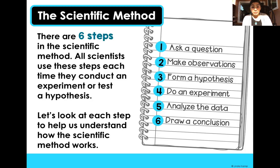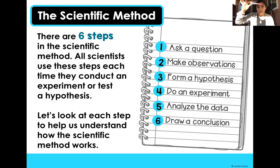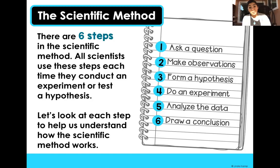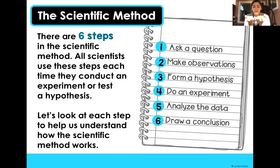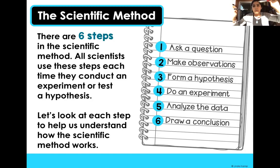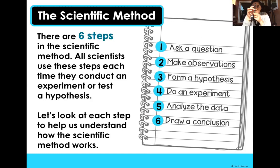The second step is you make observations. Let's say I want to know what happens when I let go of this pencil. Would it float or would it fall? So that's my question — what would happen to this pencil if I let it go? Then for the second step, I have to make observations. I have to look at the pencil. Is it heavy? Is it light? What color is it? This pen is red and this pen is black — maybe the red will help it float. So I'm making observations, looking at the details of each thing.